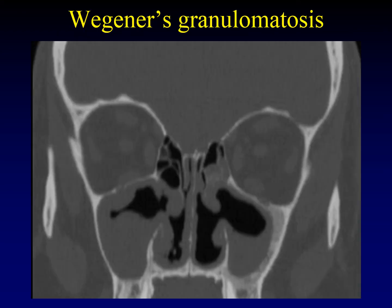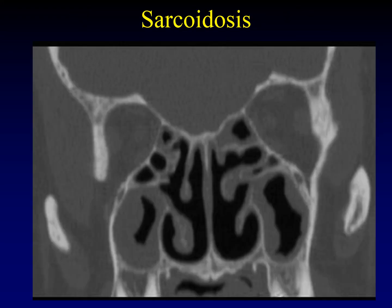Here's an example of Wegener's granulomatosis. You can see loss of the intranasal contents, particularly truncation of the inferior turbinate and erosions through the walls of the sinuses. Sarcoid can look just like Wegener's granulomatosis — in this case it's predominantly affecting the ethmoid air cells, but you can also see truncation of the inferior turbinate.